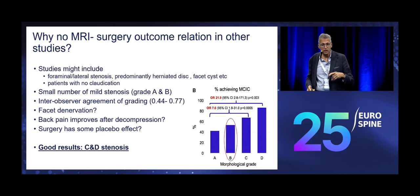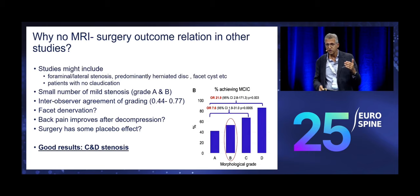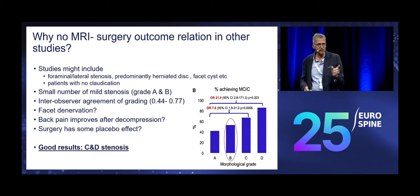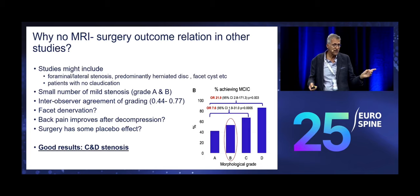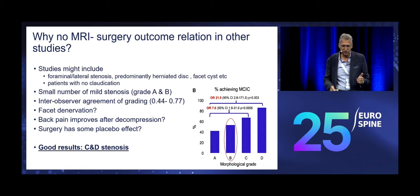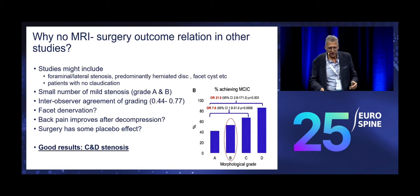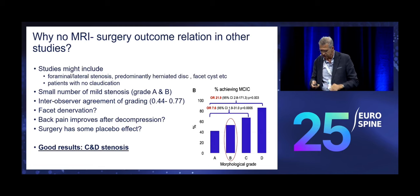Why is there no relation between MRI and results? Many studies also include foraminal stenosis, lateral stenosis, herniated discs, and facet issues. In all those studies there is a very small number of A and B patients. The inter-observer agreement on grading is not great — you could grade a B and it's actually a C. Does facet denervation explain why Grade A's and B's get better? Does back pain improve after decompression? Does surgery have a placebo effect? If you want to have good results, stick to Grade C's and D's and you should be okay.